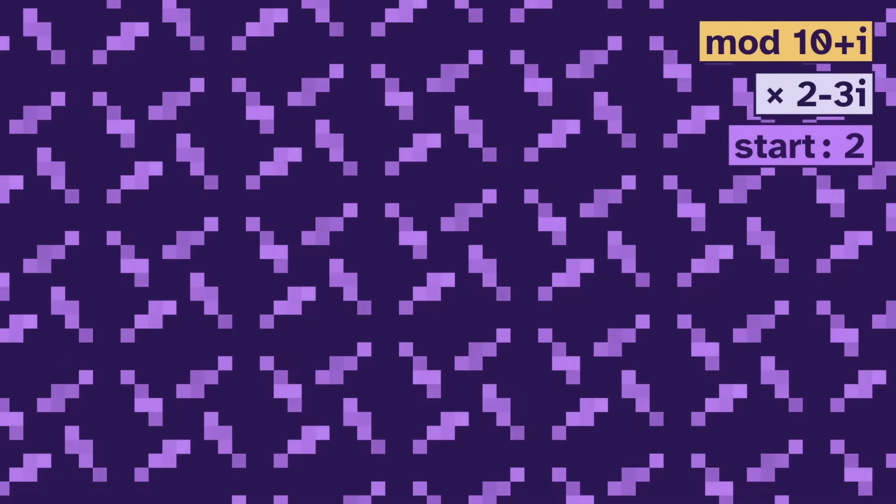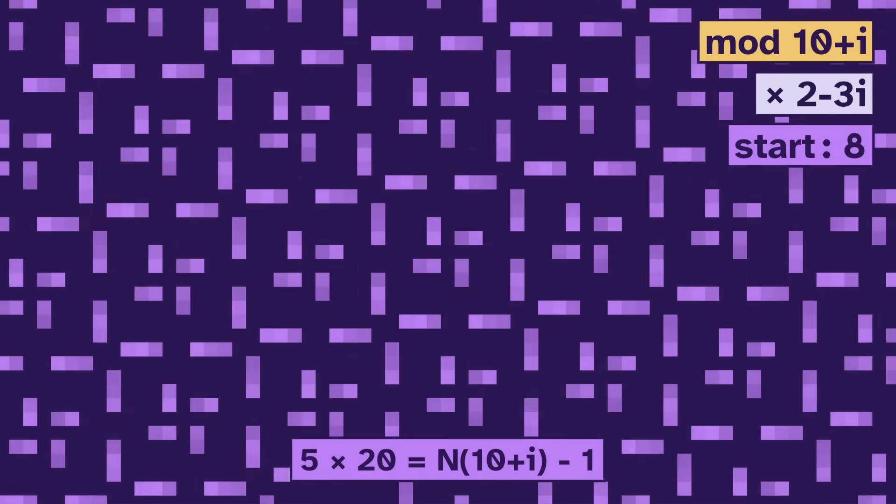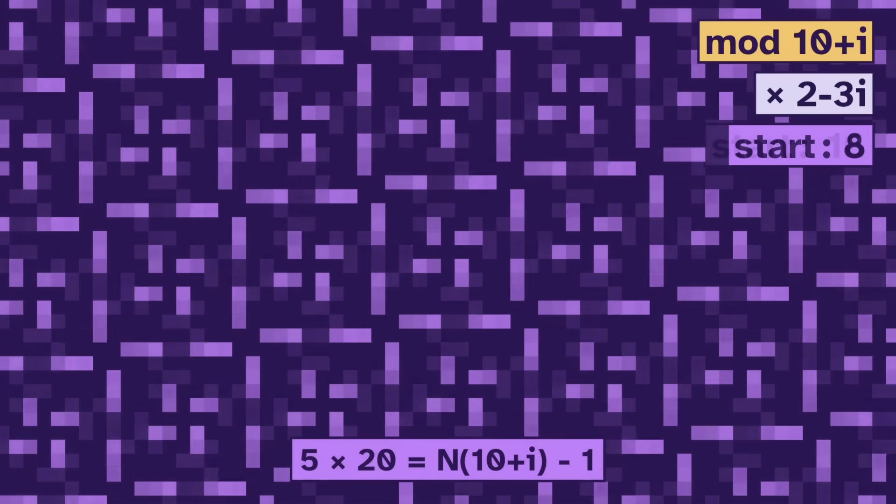As another example, let's use mod 10 plus i, and multiply by 2 minus 3i. We get a loop length of 20. There are five different loops, since 5 times 20 is the norm minus 1. And here are some other patterns.